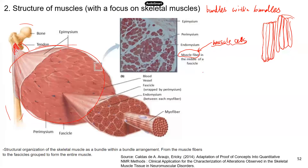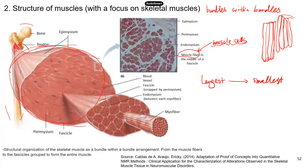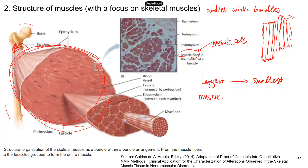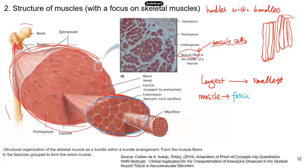We're going to go from the largest to the smallest. The largest is going to be a whole muscle — whatever that muscle is, it could be the deltoid muscle or the sternocleidomastoid muscle. That's an individual muscle, that's a big bundle. When you look more closely, this big bundle is made up of multiple smaller bundles. The next level — the smaller bundle that makes up a muscle — is called a fascicle. Each muscle has many, many bundles of fascicles.